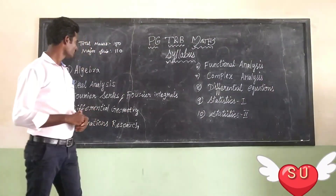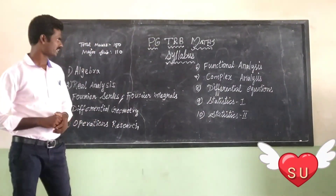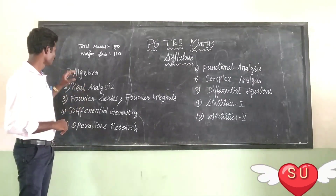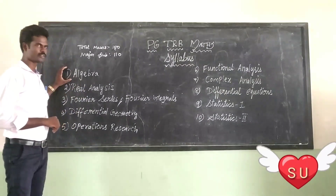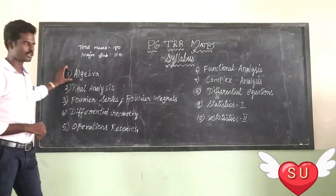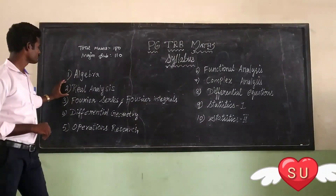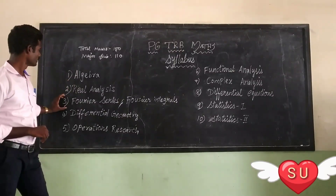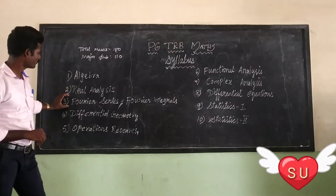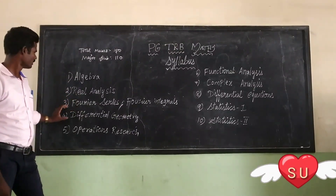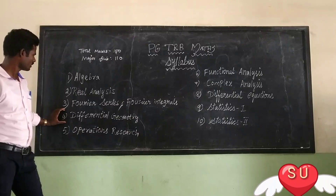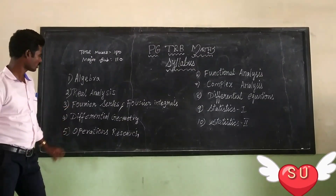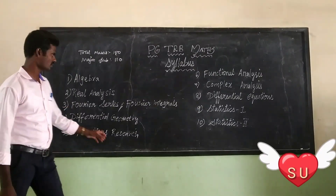So, first one, we have units in NIR, we have ACR. First one, we have algebra. Next, analysis. Next, third unit — this is Fourier series and Fourier integral. Next, fourth one, differential geometry. Fifth one, operational research.